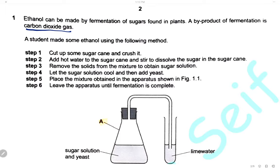Cut some sugar cane and crush it. Add hot water to the sugar cane and stir to dissolve the sugar to obtain a sugar solution. Then remove the solid from the mixture. Let the sugar cane solution cool and then add the yeast. Place the mixture obtained in the apparatus shown in figure 1.1, then leave it until the fermentation is completed.